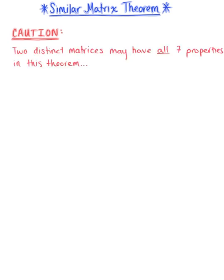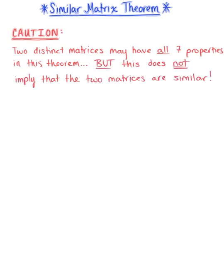Two distinct matrices may have all of the properties that we just saw in this theorem, but this does not imply that they are similar. We want to be careful here.